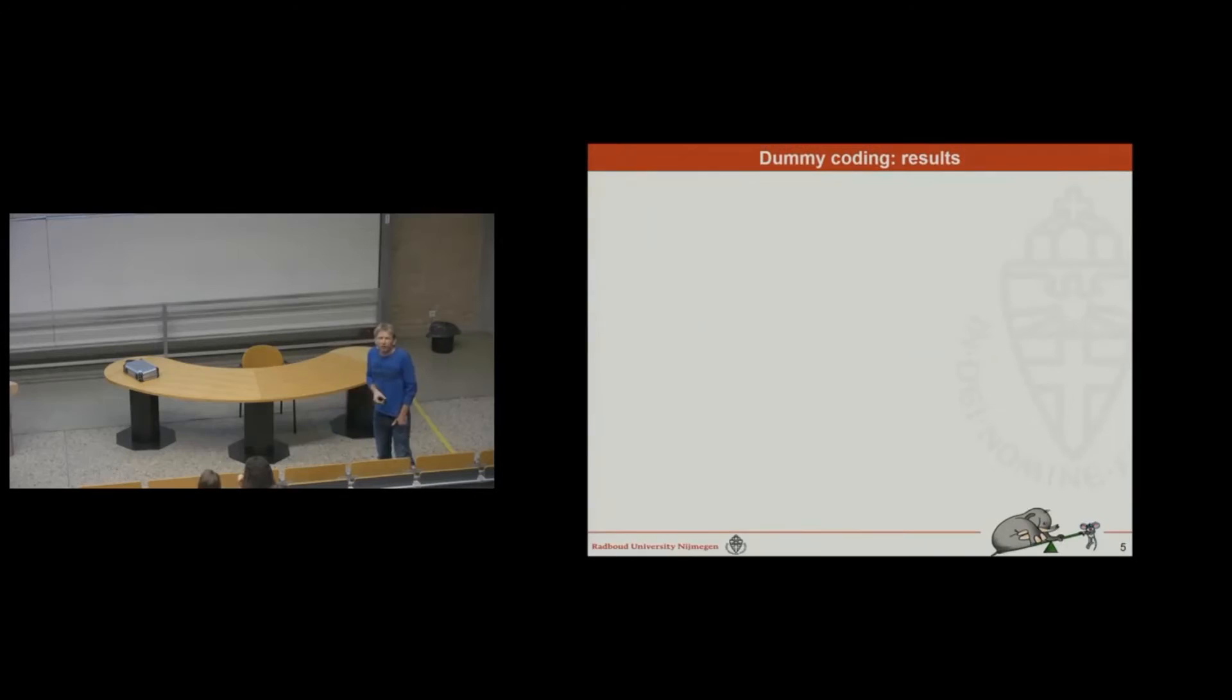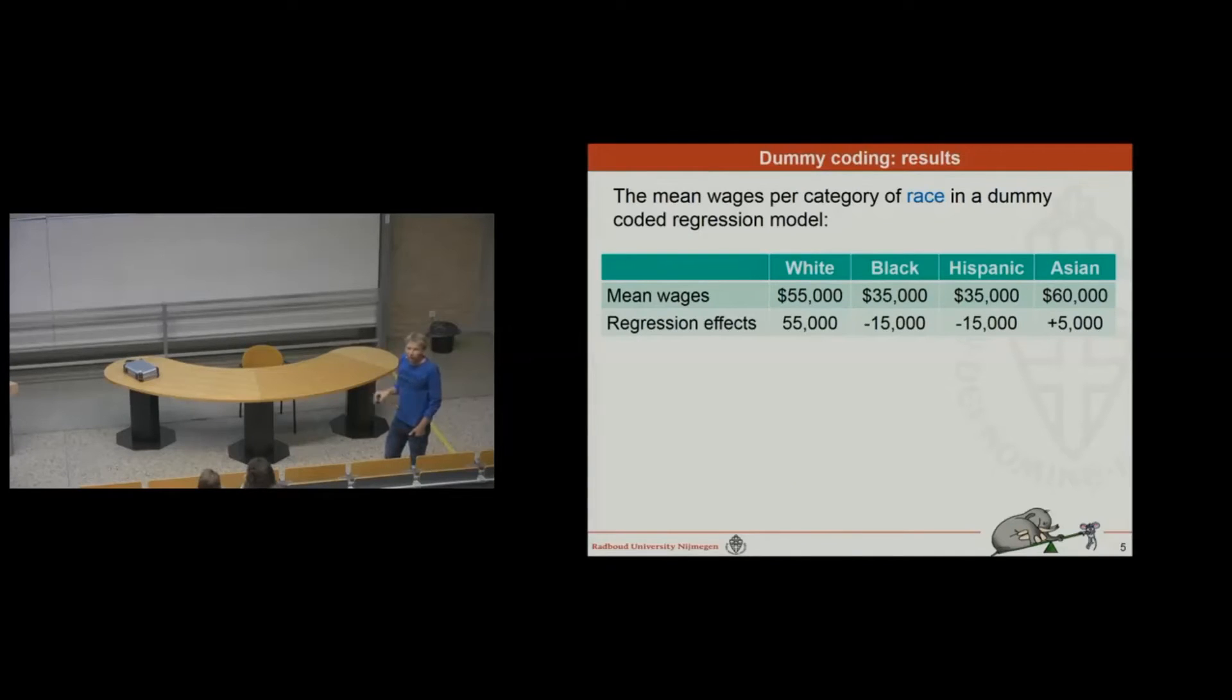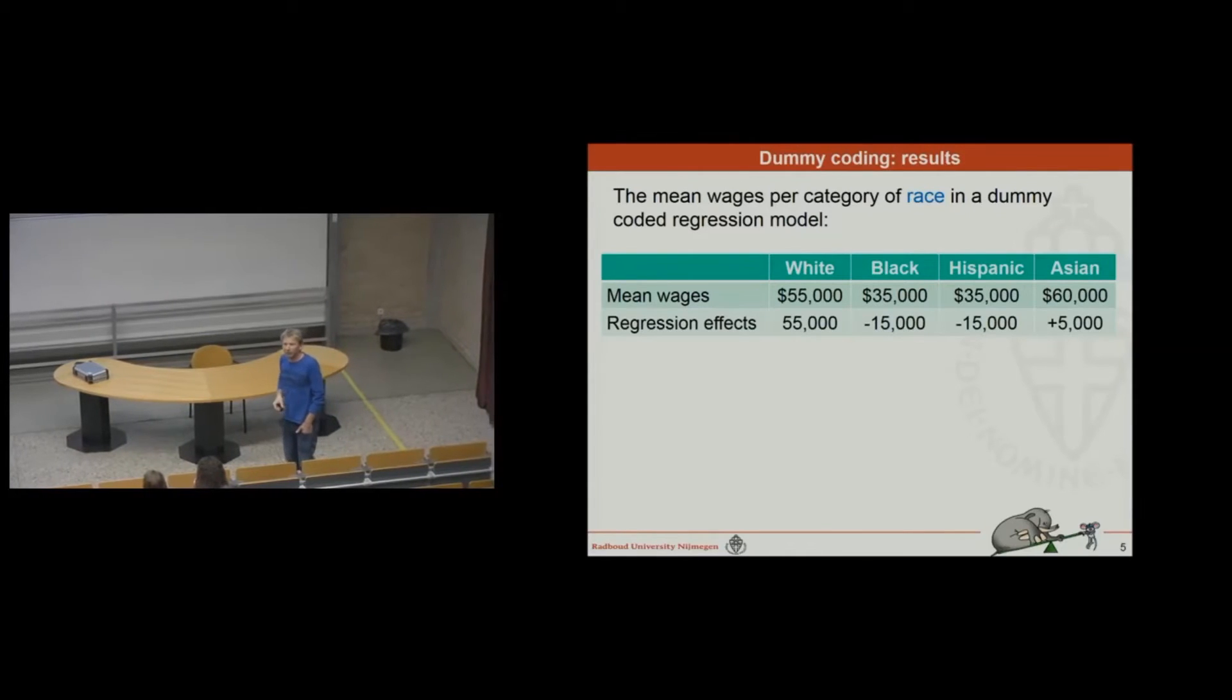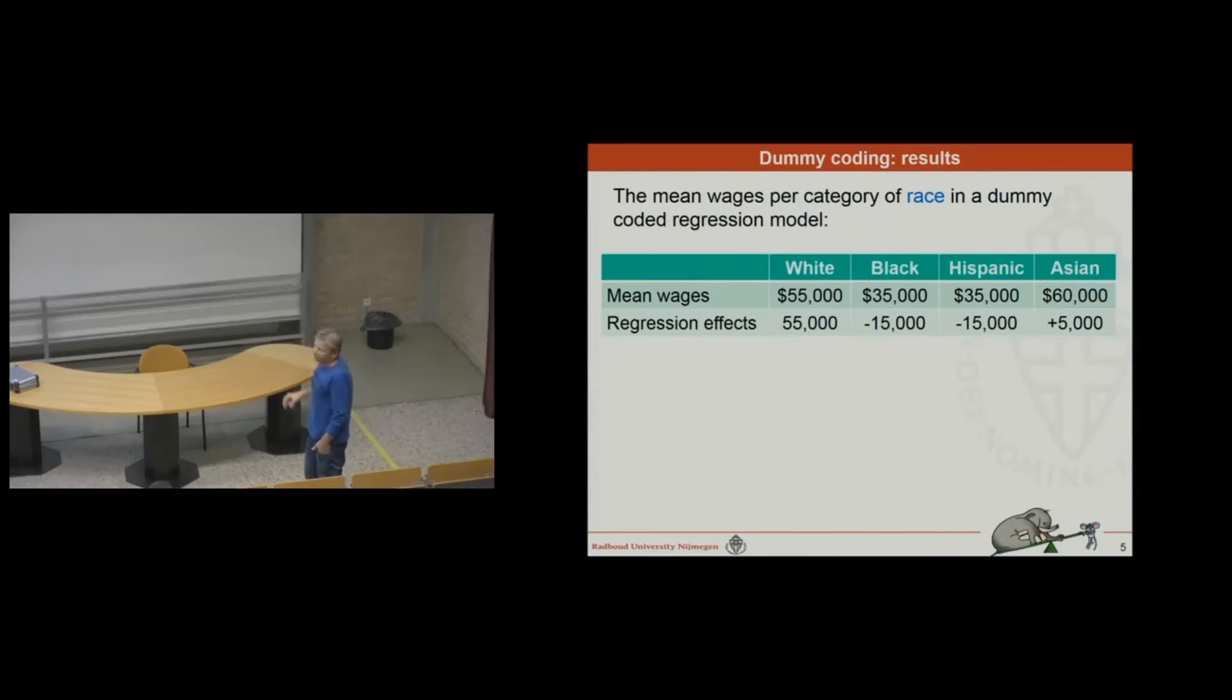So, let's take a look how this works. We take the whites as a reference, and we have the mean wages over here. These are observed mean wages in America. And we see that the white population, on average, has a mean wage of 55 grand. That's before taxes, it's a yearly income. And we see that the black population, on average, earns a lot less. It's 35 grand. Same goes for the Hispanics, also 35 grand. And we see the Asians do a little bit better than the white population, which came a little bit as a surprise to me, but I'm not really into this. I know not much about the American situation, but the Asians do better. They earn 60 grand on average.